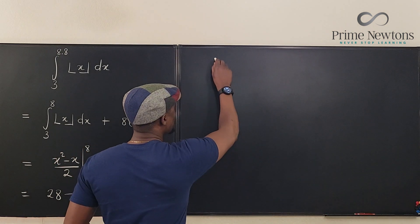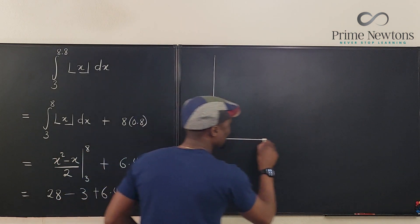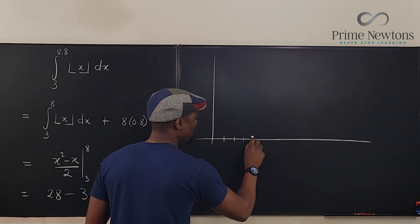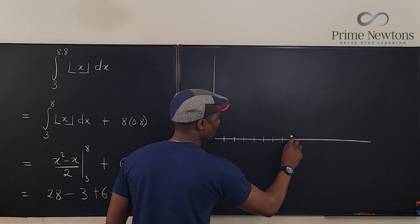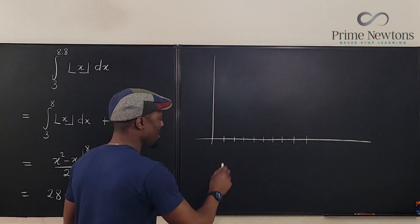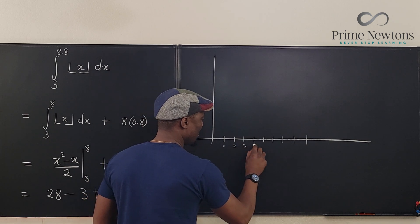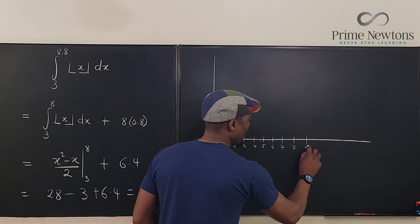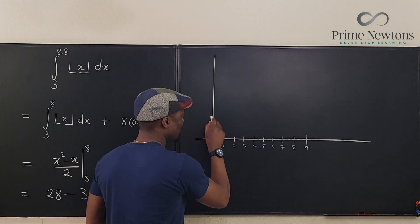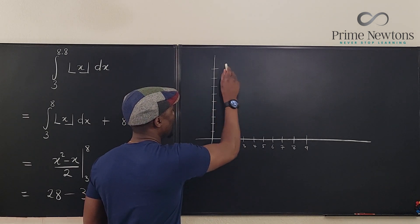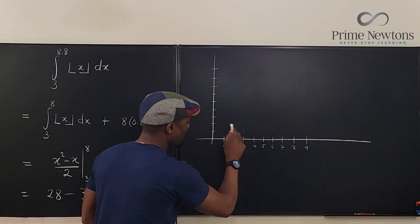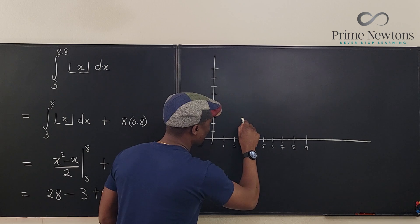Suppose this is the graph of the floor of x. We're going up to 8.8, so we have values from 1 through 9 on the x-axis. Starting from x = 3, the floor function from 3 to 4 is a constant horizontal step. Then from 4 to 5 the step goes up, from 5 to 6, then 6 to 7, and so on — each interval gives a constant floor value.